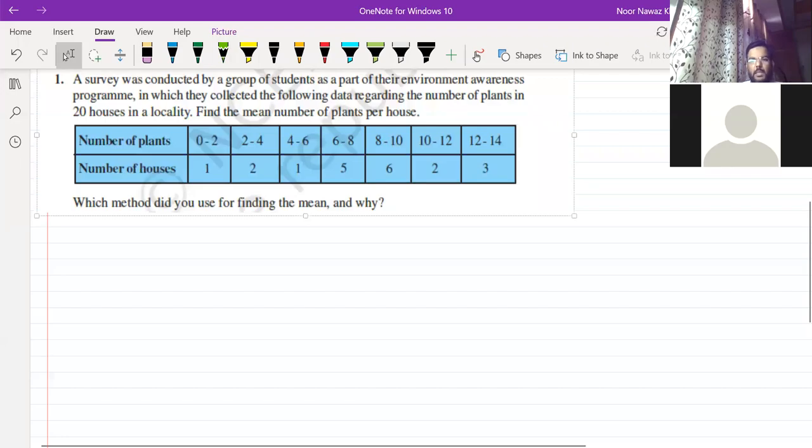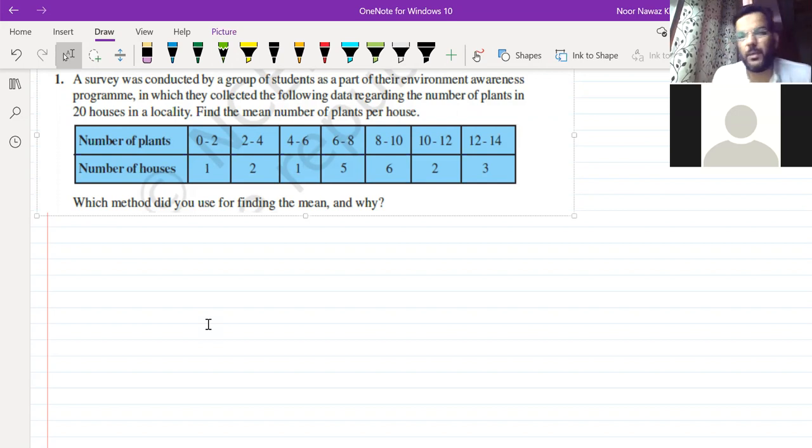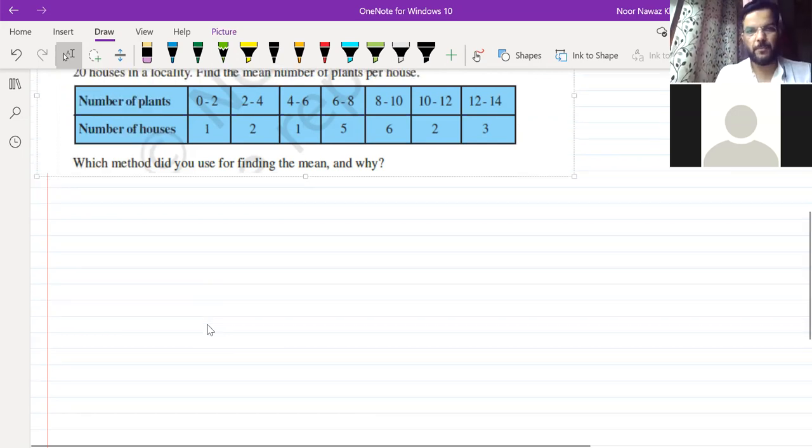When we take out the mean, which you have studied in the 9th in statistics, this is a table that we call group data. When we make a group or class, there is a group of 0-2, there is a group of 2-4, there is a group of 4-6, and there is a frequency, the number of houses.